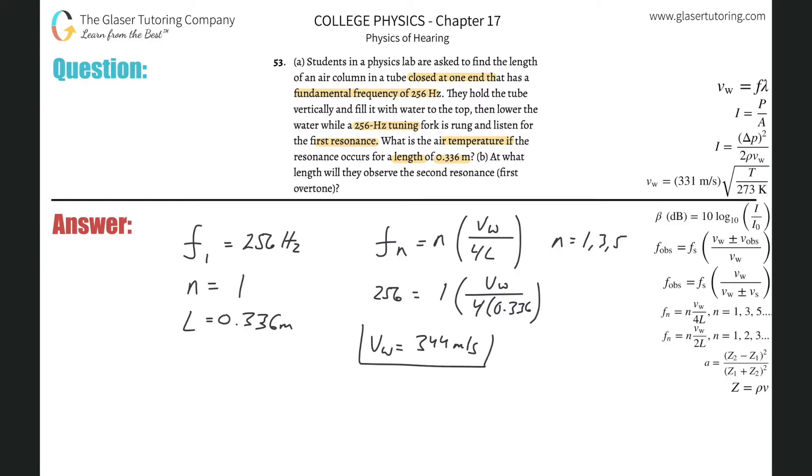Then you have to ask yourself, okay, I found the velocity. How can I now relate that to air temperature? Well, remember, we have that formula. The velocity of the air at a particular temperature will be equal to 331. This is for air, that's basically the speed of sound through air at 0 degrees Celsius. Multiplied now by the Kelvin temperature divided by 273. So all I now really need to do is solve for the T.